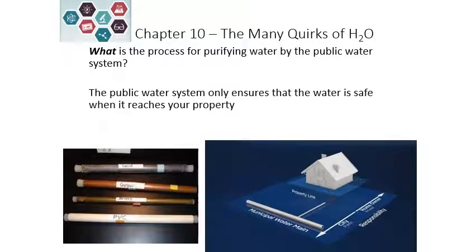The public water system and water treatment plants are only in place to ensure the water is safe when it reaches the edge of your property. Once it crosses from the public water system into your house, it is up to you to make sure it remains safe from that point on inside your property.